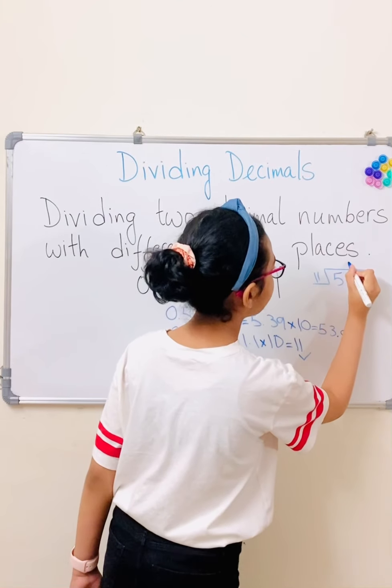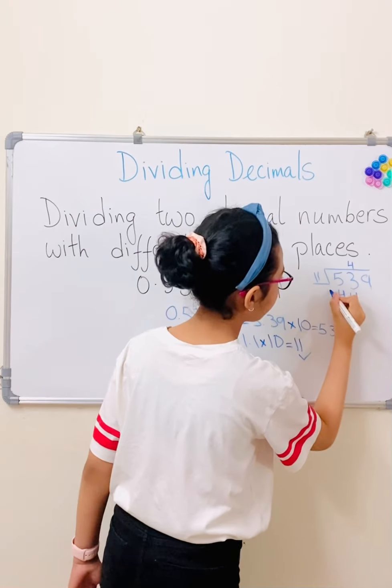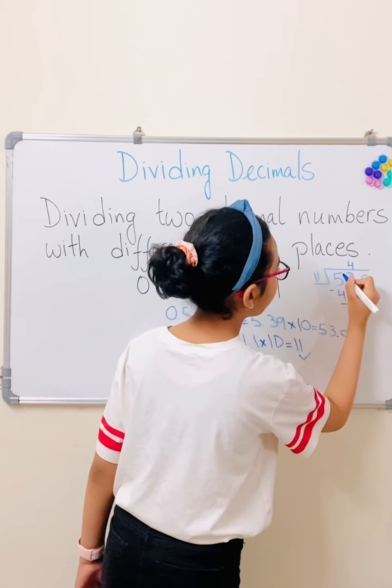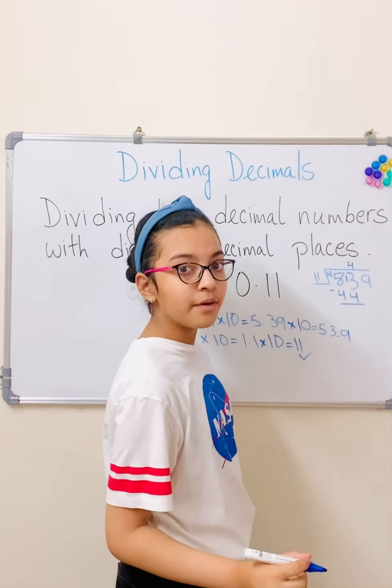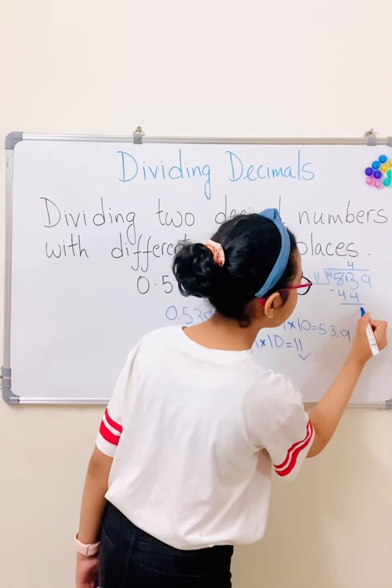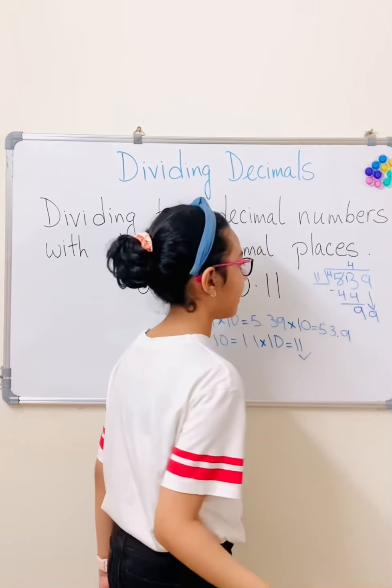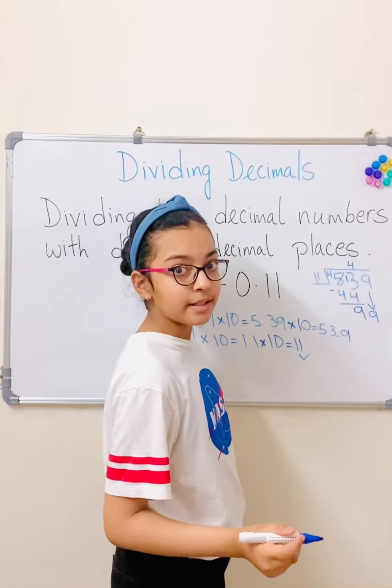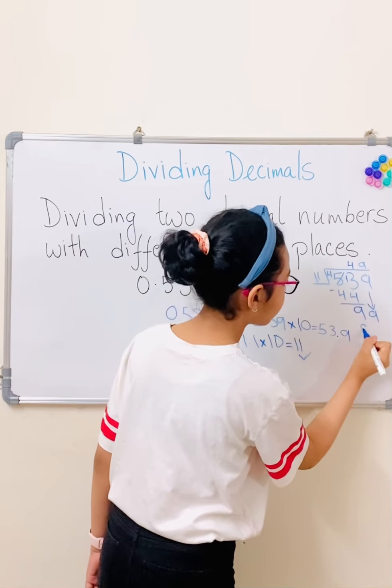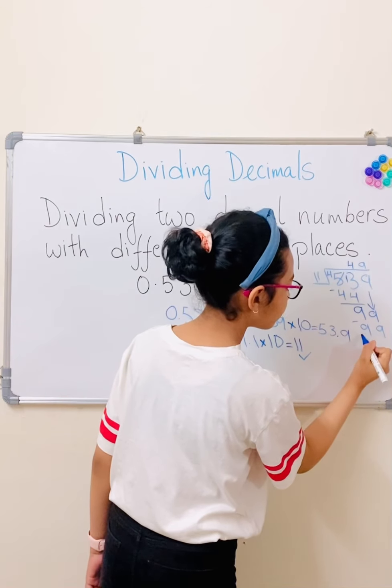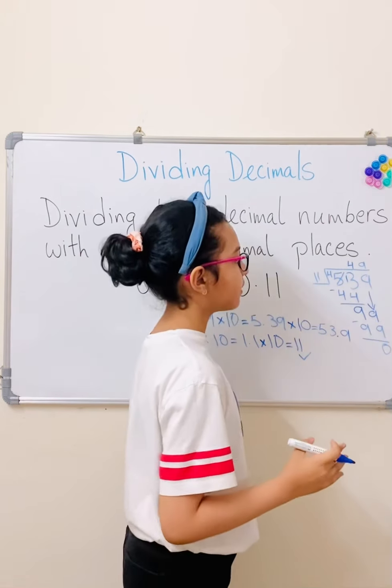So 11 times 4 is 44. And now we need to borrow here. And 13 minus 4 is 9. So we bring the other 9 down. And 11 times 9 is 99. So we get a 0 for the remainder.